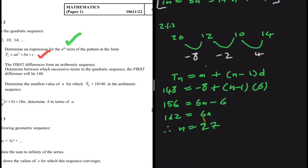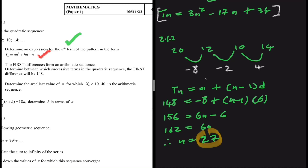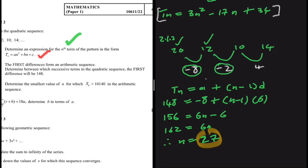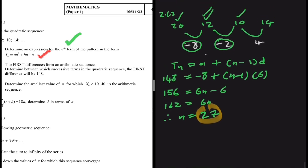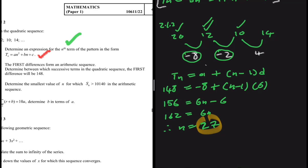So n = 27 in the arithmetic sequence — but between which two terms in the quadratic sequence does this fall? The first difference term at n = 1 in the arithmetic sequence corresponds to between n = 1 and n = 2 in the quadratic. Following the trend, n = 27 in the arithmetic sequence is between n = 27 and n = 28 in the quadratic sequence.